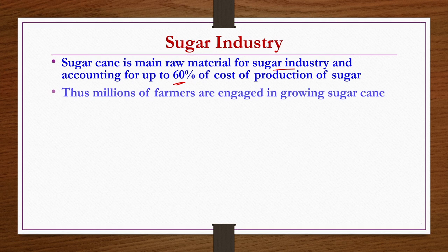Since sugarcane accounts for 60 percent of production cost, millions of farmers are engaged in growing it — which is an advantage from the farmers' point of view. But from the industry's point of view, it is a disadvantage because the industry cannot control the quality or quantity of sugarcane supplied. The sugar industry is indirectly dependent on the farmers.